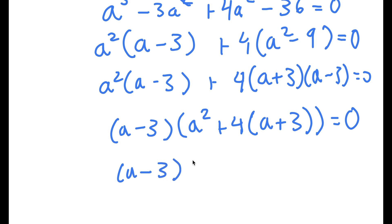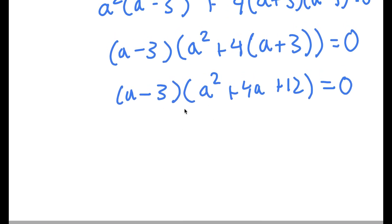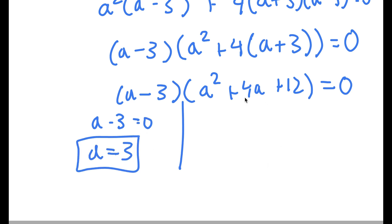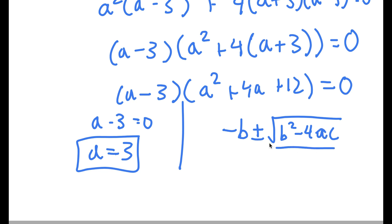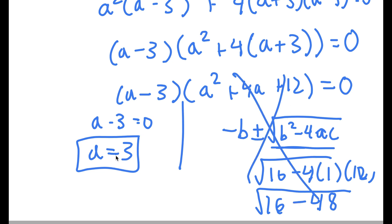This gives (a minus 3)(a squared plus 4a plus 12) equals 0, giving two equations: a minus 3 equals 0, meaning a equals 3, and a squared plus 4a plus 12 equals 0. Using the quadratic formula, the discriminant is b squared minus 4ac: 4 squared minus 4 times 1 times 12, which is 16 minus 48, giving the square root of negative 36. Since you can't take the square root of a negative number, this equation has no real solutions, so my only solution is a equals 3.